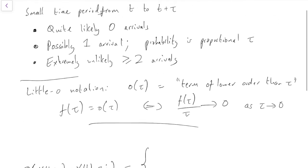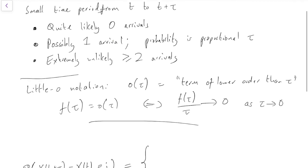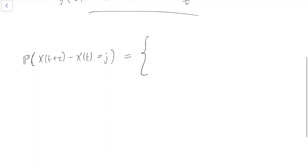Well, let's work from the bottom upwards. The thing we said at the bottom was it's extremely unlikely to have greater than two arrivals. So extremely unlikely here means lower order term, little o of tau. So if j is greater than or equal to two, the probability we have two or more arrivals is little o of tau. Just really, really tiny.